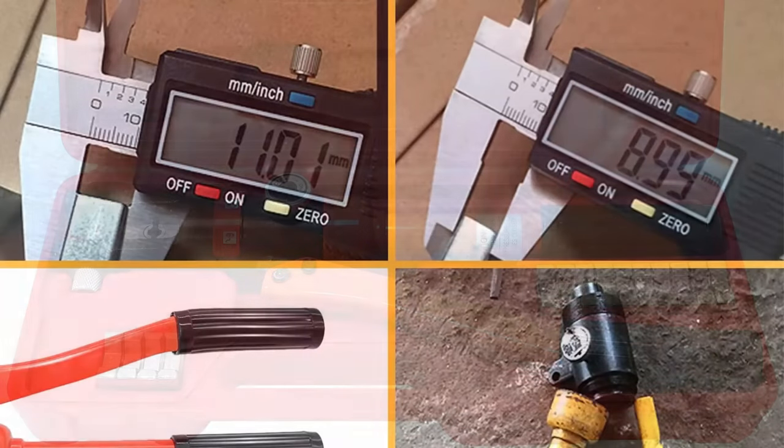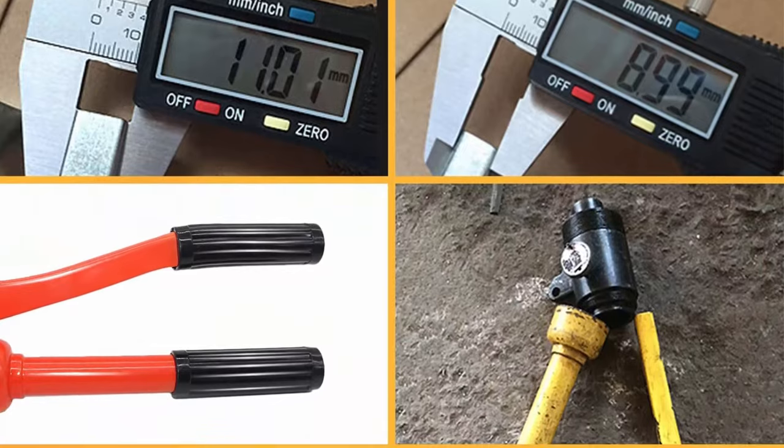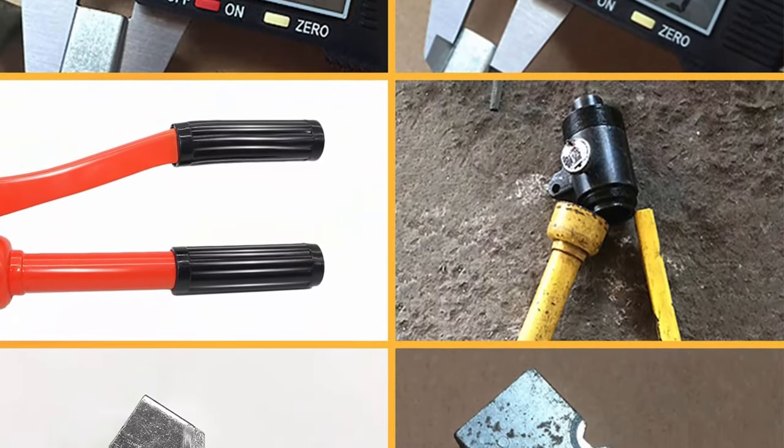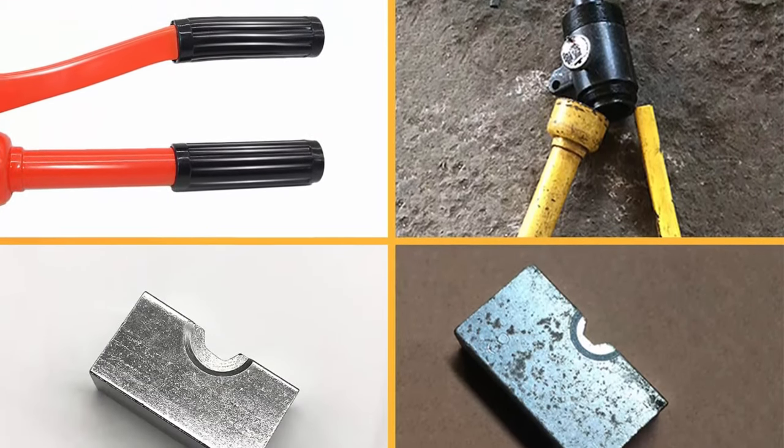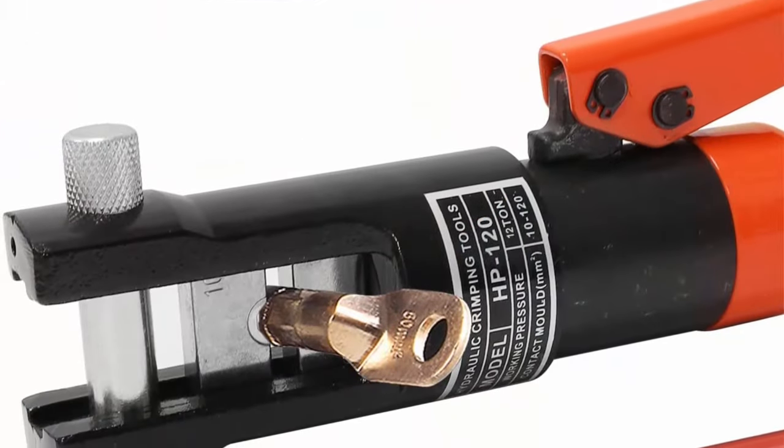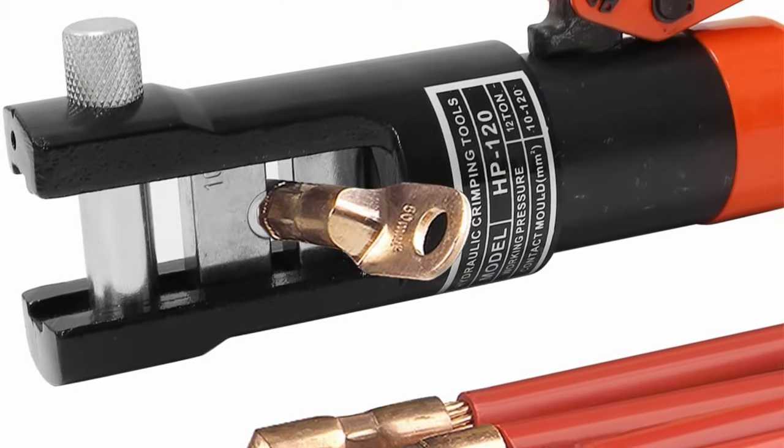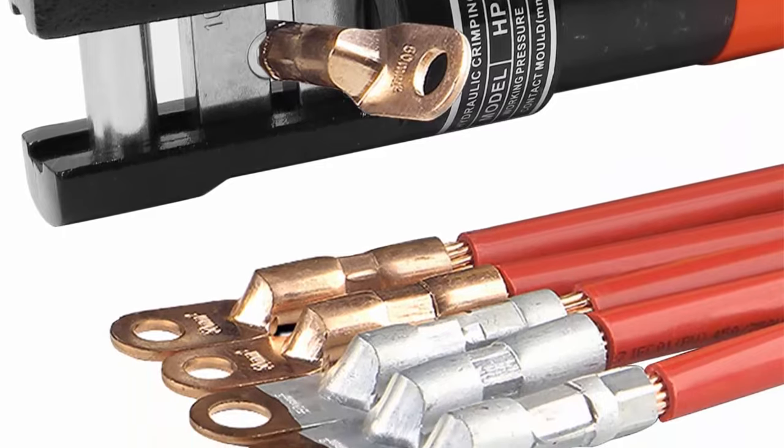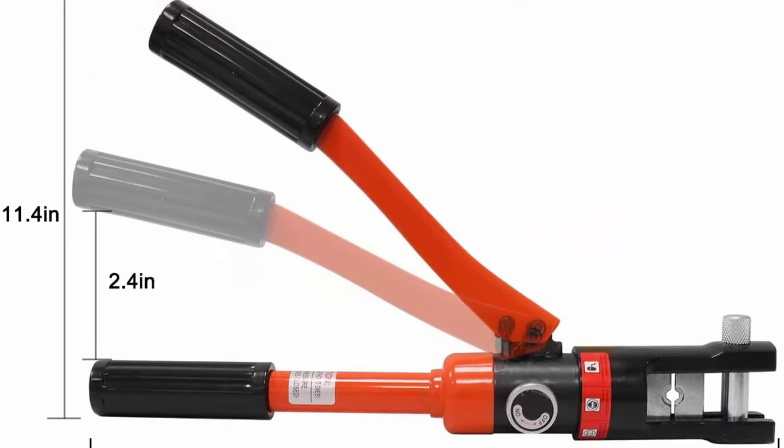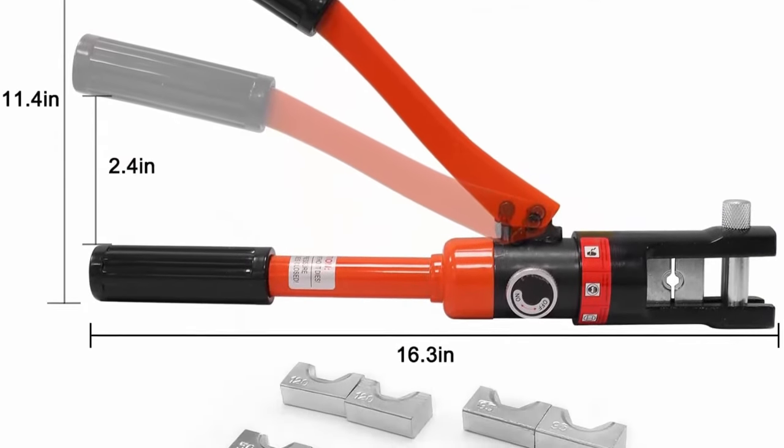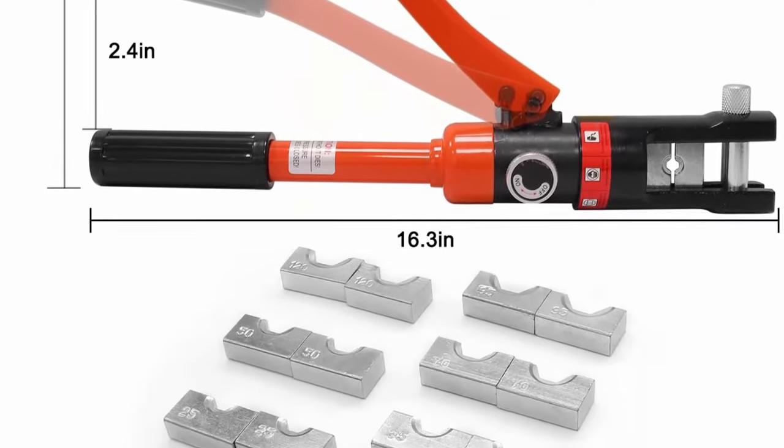Die sizes: 8 AWG, 6 AWG, 4 AWG, 2 AWG, 1/0 AWG, 2/0 AWG, 3/0 AWG, 4/0 to 250 MCM, 10-16-25-35-50-70-95-120 mm². Compatible with cable and welding cable, power cord, and more.